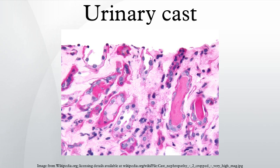Red blood cell casts: the presence of red blood cells within the cast is always pathological and is strongly indicative of glomerular damage, which can occur in glomerulonephritis from various causes or vasculitis, including Wegener's granulomatosis, systemic lupus erythematosus, post-streptococcal glomerulonephritis, or Goodpasture's syndrome. They can also be associated with renal infarction and subacute bacterial endocarditis. They are a yellowish-brown color and are generally cylindrical with sometimes ragged edges. Their fragility makes inspection of a fresh sample necessary. They are usually associated with nephritic syndromes or urinary tract injury.